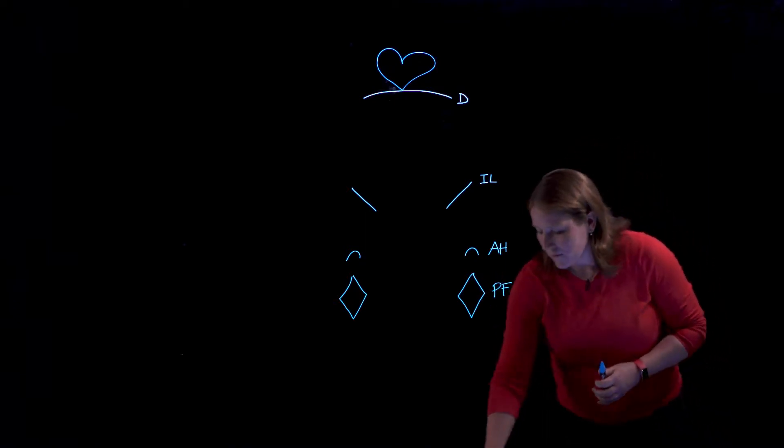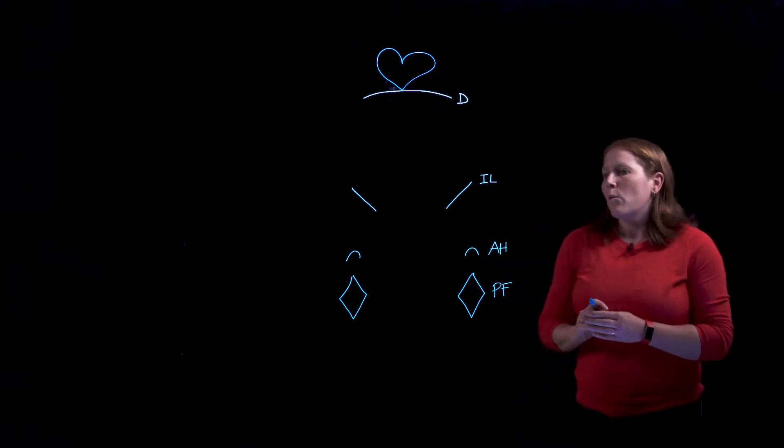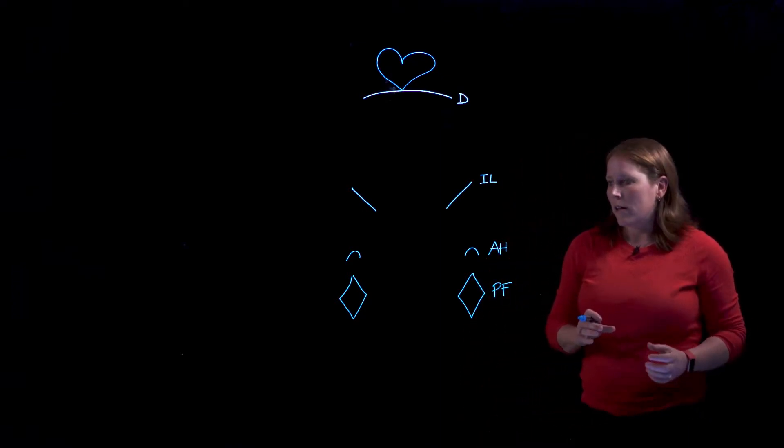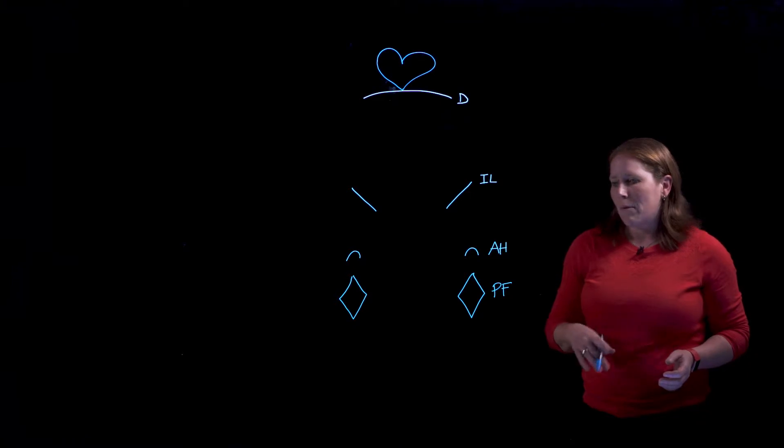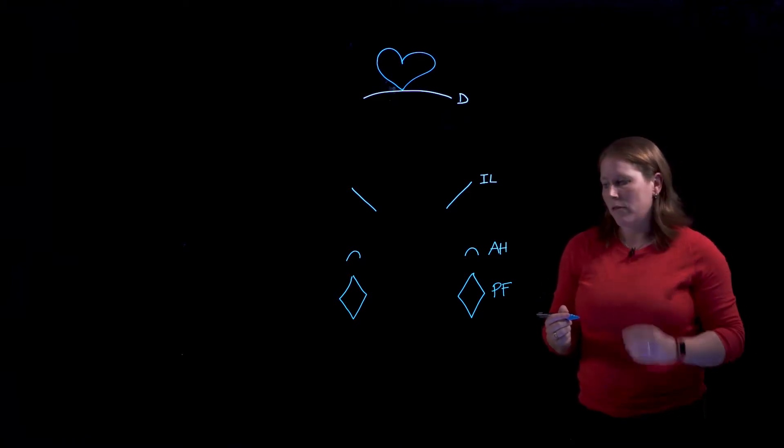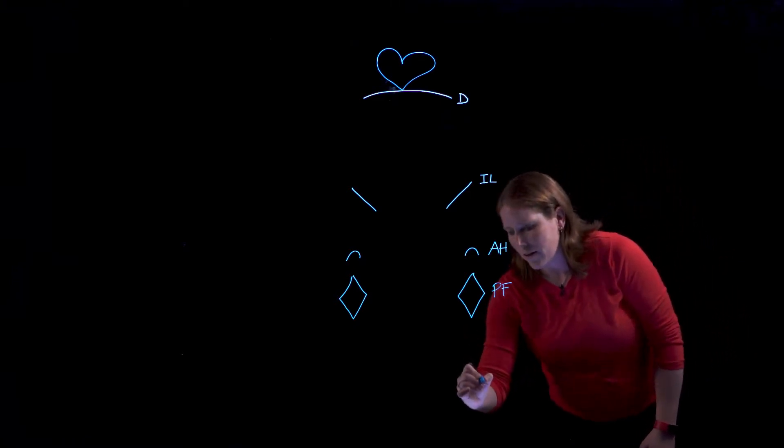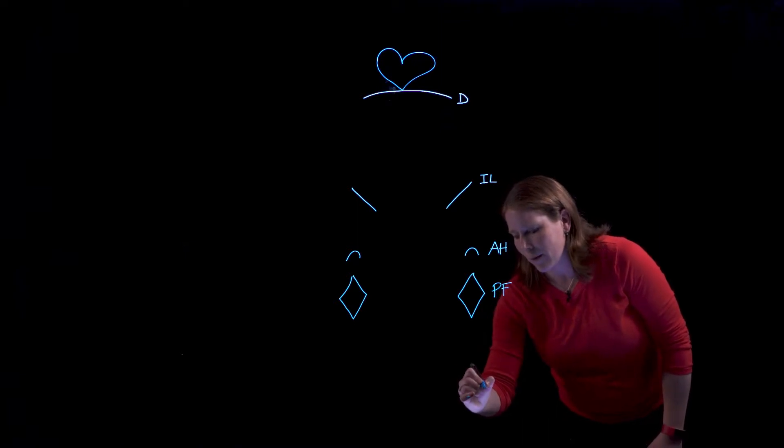So when we look at veins as opposed to arteries we always start distal away from the heart and think about working our way back to the heart the same way that blood would flow. So we're actually going to start down here near the ankle and working our way back up the leg.